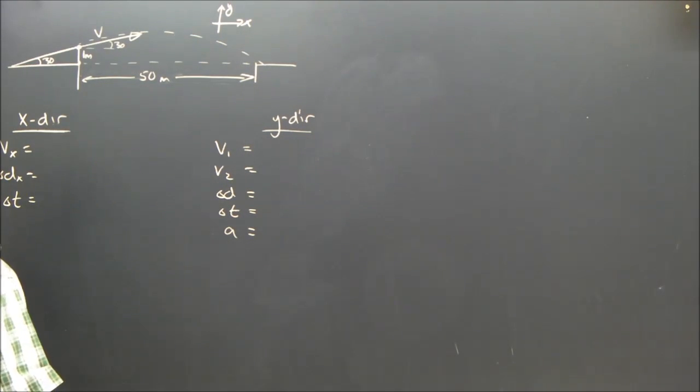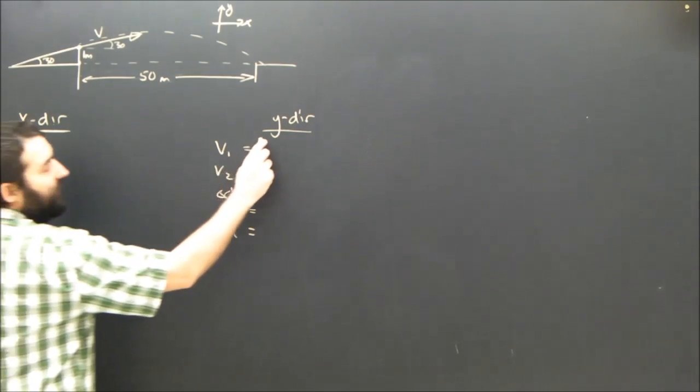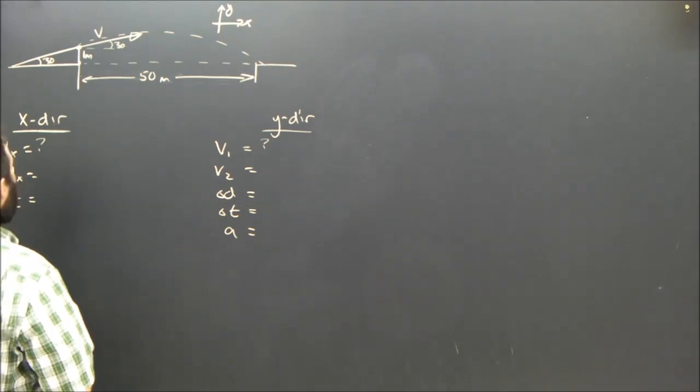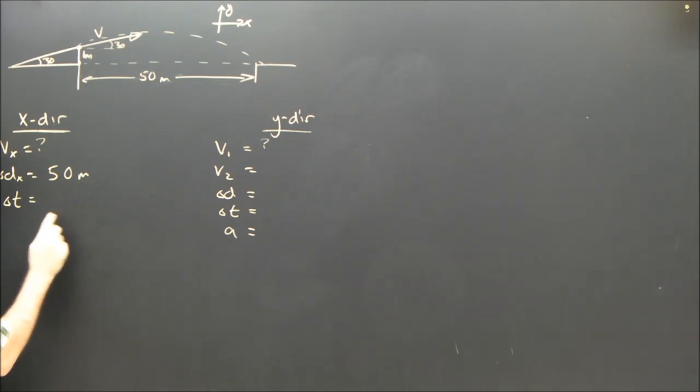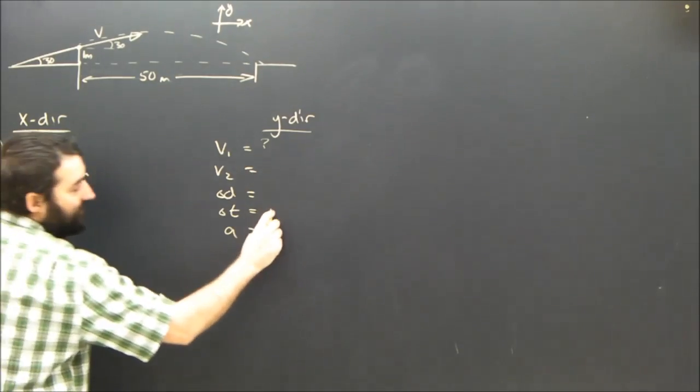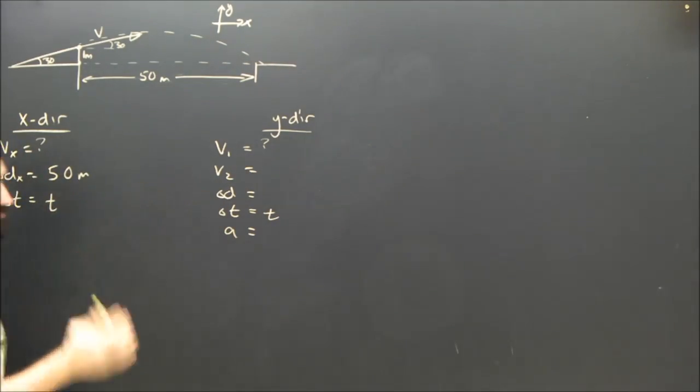Okay, so what givens are there? Now, we don't know the x or y components of the velocity. We do know the horizontal range, just 50 meters. We don't know the time. Just like all projectile motion problems, the time really connects the two sections. So the times are the same.